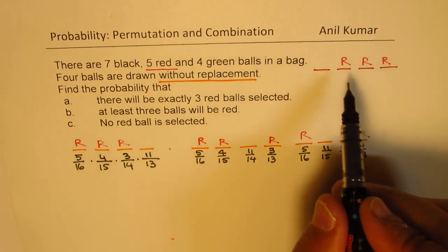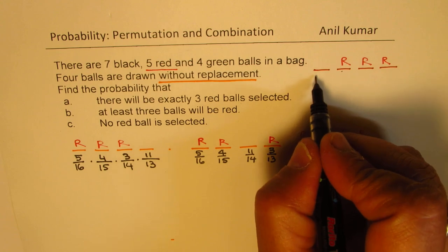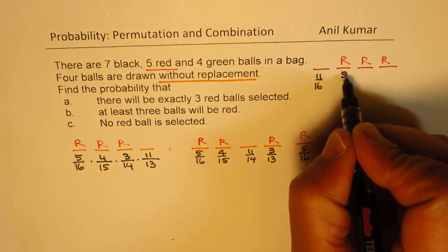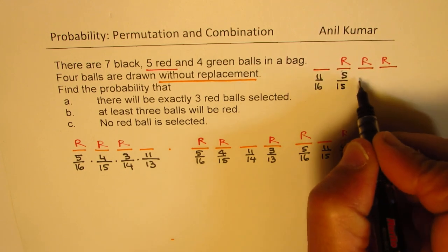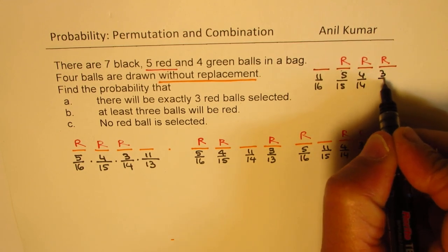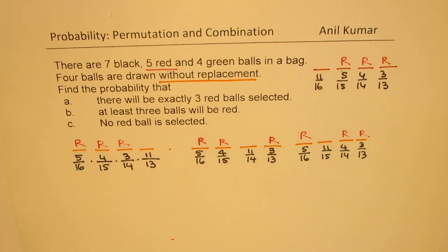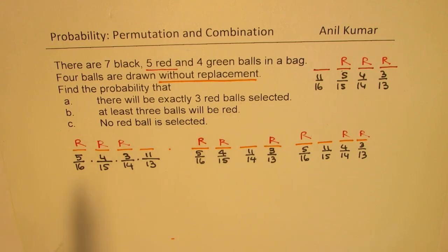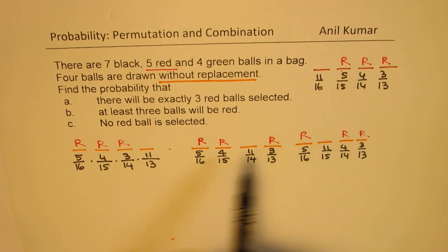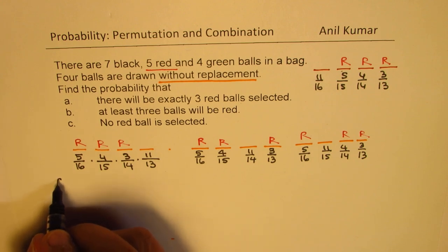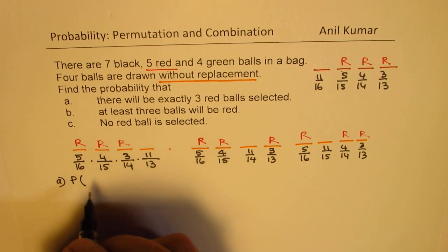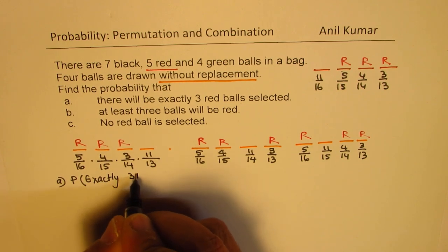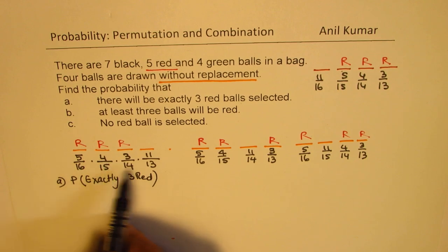Lastly, another way to get 3 reds is to miss it the first time. So we get 11 out of 16 for some other ball, then 5 out of 15 remaining, then 4 out of 14, and 3 out of 13. So for Part A — exactly 3 red balls selected — the answer will be the sum of these 4 cases.